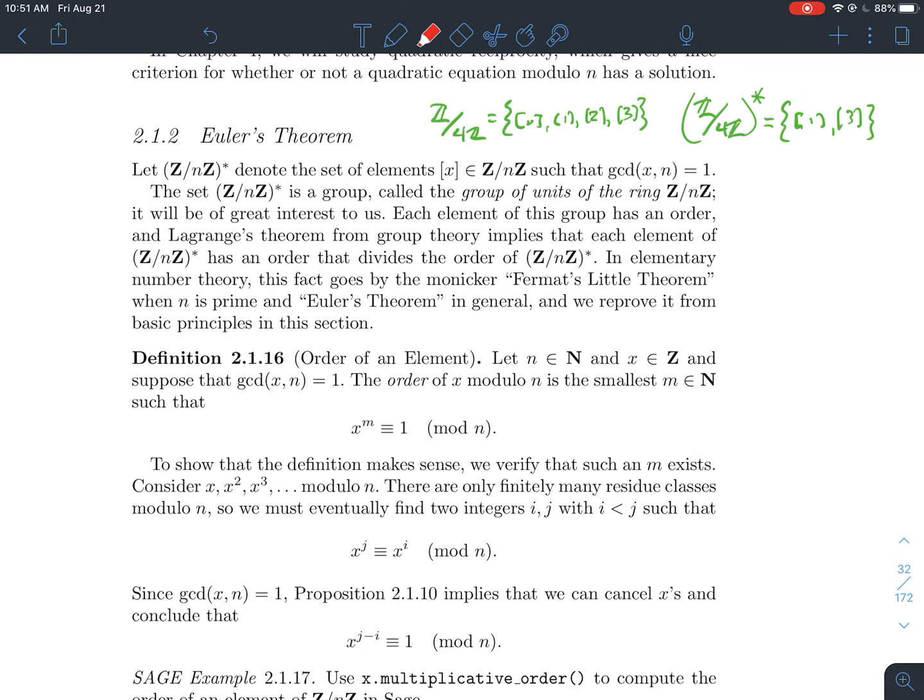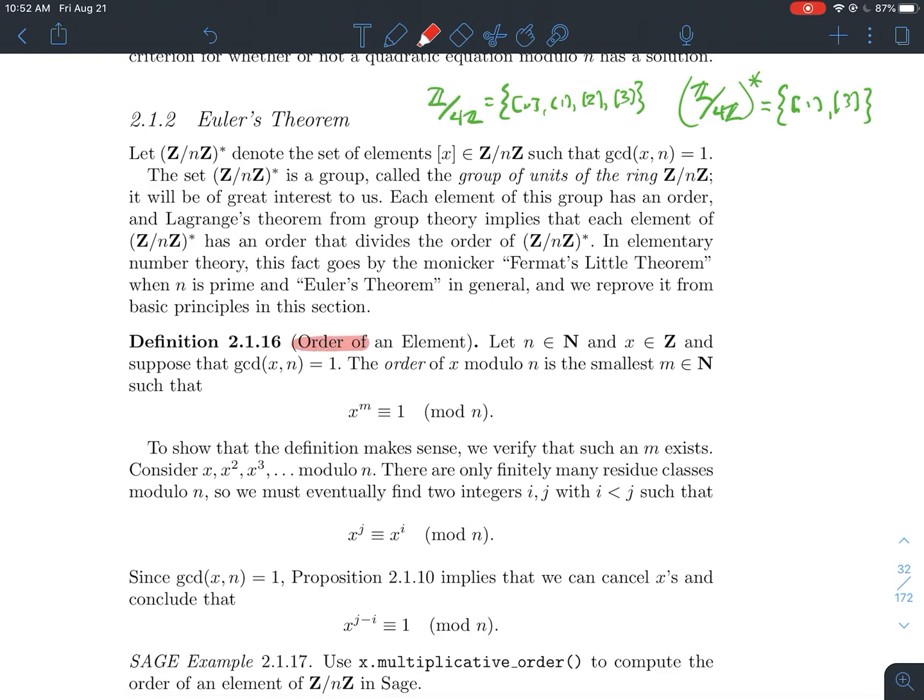What we'll do is we'll kind of dive into what we're going to do in this video. We're going to talk about the order of an element, and we'll get into definition 2.1.16 in just a moment. We're going to define the order of an element. Remember the order of a group is just the cardinality of it. We're going to see how does the order of an element relate to the order of the whole group. If you've had some group theory before, you might recall that's Lagrange's theorem. The order of an element has to divide the order of a group. The more specialized case is when n is a prime number, we usually call it Fermat's little theorem. And more generally, for any natural number n, we'll call it Euler's theorem. And Euler's theorem is what all this is going to kind of build toward.